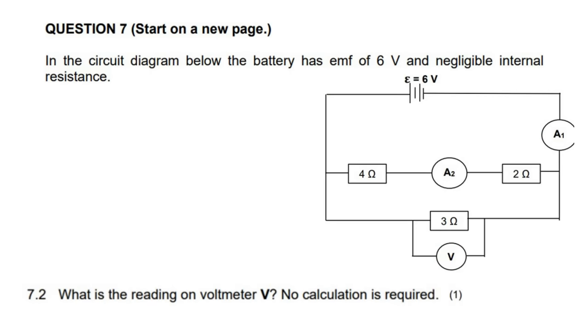And then with this question, it says, what is the reading on voltmeter V? Well, remember, we already spoke about that, and we said that that would also just be 6 volts. And we discussed the reasons why in the previous part.